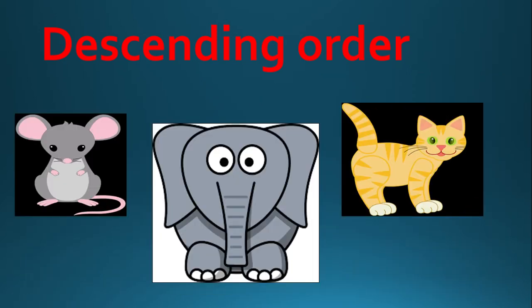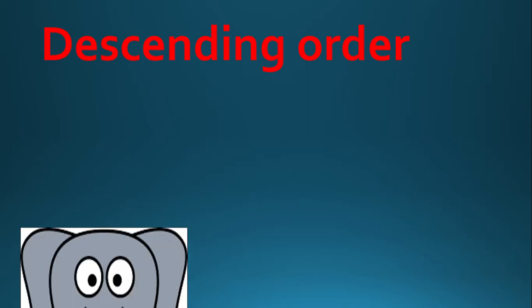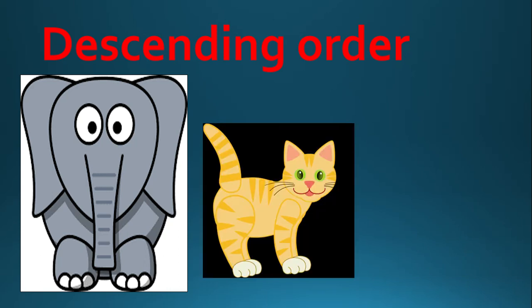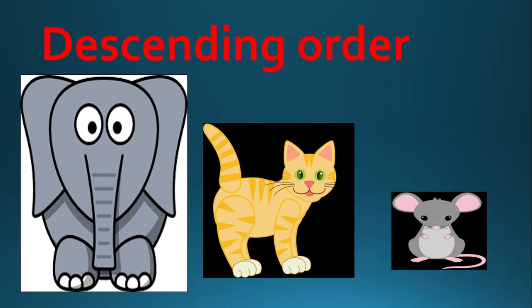Let's arrange these animals according to their size. First will come the elephant, because elephant is the biggest animal. Then the cat — cat is smaller than elephant. And the last will be the mouse, because mouse is the smallest. So when we arrange any object from biggest to smaller form, it is called descending order.